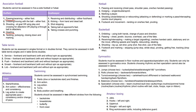If you're doing table tennis, you could choose service as a strength and maybe a smash as a weakness. Or for athletics, you might choose your sprint start as your strength and your arm action as your weakness. For the purpose of this video, I'm going to choose passing for netball as my strength and shooting as my weakness.